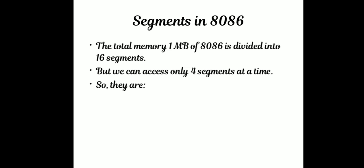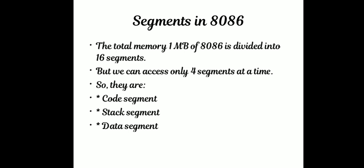The 4 accessible segments are: Code Segment, which stores program instructions and coding; Stack Segment, which stores the stack — some portion of data in an array of memory locations; and Data Segment, where data used during program execution is stored.